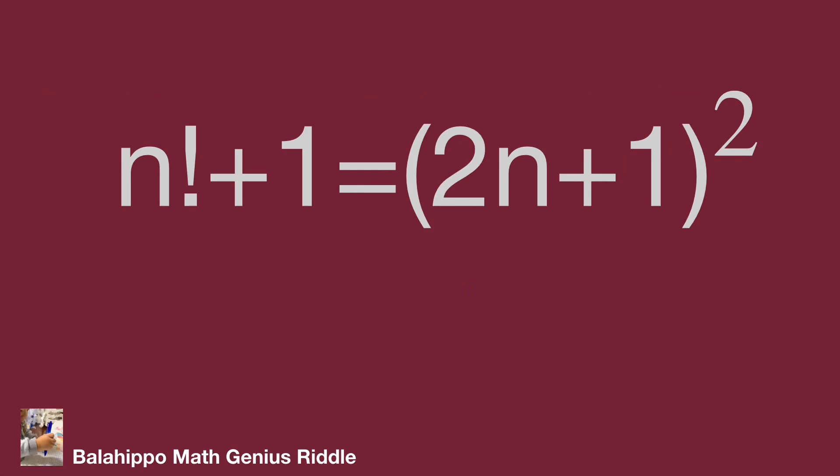The question is to find n from the equation: n factorial plus 1 equals the quantity 2n plus 1 squared. Before solving, let's recap what a factorial is.